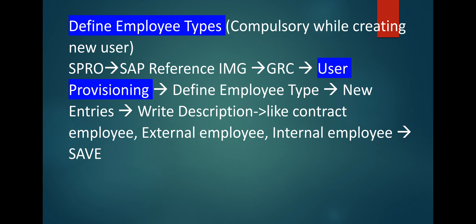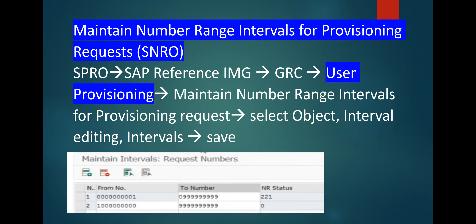Another setting is define employee types — this is compulsory or mandatory while creating a new user. Go to user provisioning > Define Employee Type > New Entries, write description like 'Contract Employee', 'External Employee', 'Permanent Employee', 'Internal Employee', and save it.